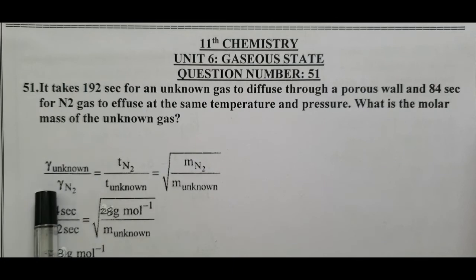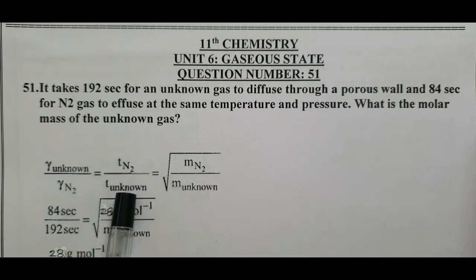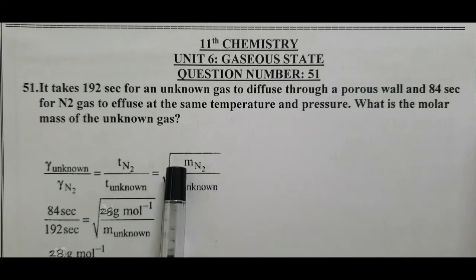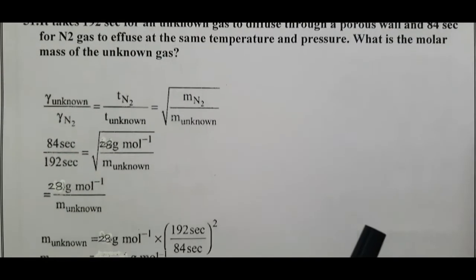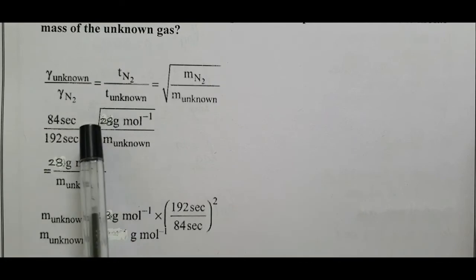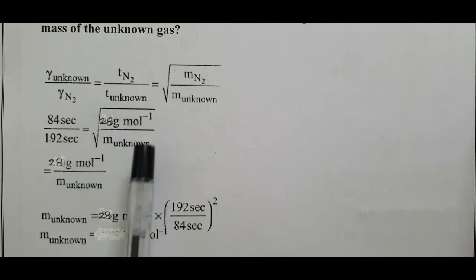Rate of unknown divided by rate of N2 equals time of N2 divided by time of unknown, inversely proportional. That equals the square root of molar mass of N2 divided by molar mass of unknown gas. Time is given for nitrogen is 84 divided by 192 seconds, that equals root of nitrogen molar mass equal to 28, 14 plus 14 equals 28, divided by the molar mass of the unknown we have to calculate.